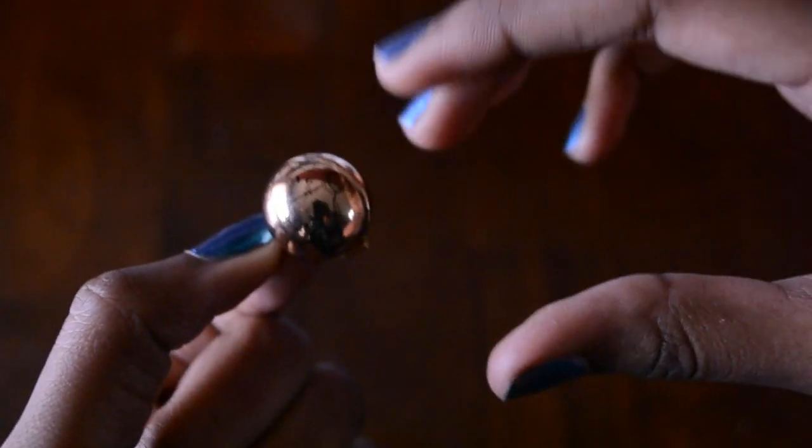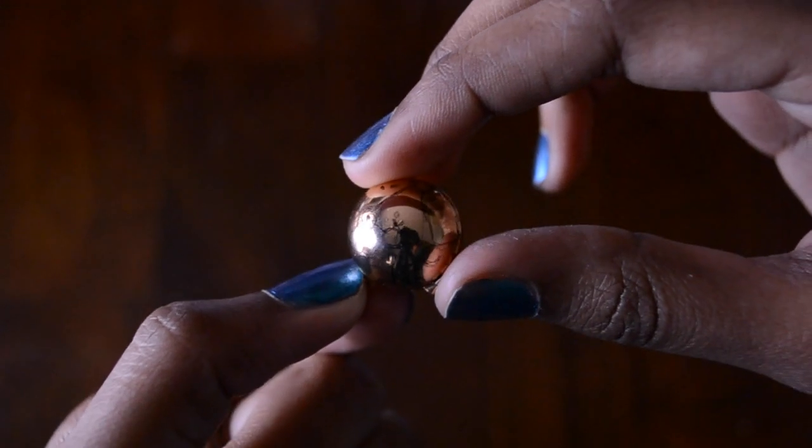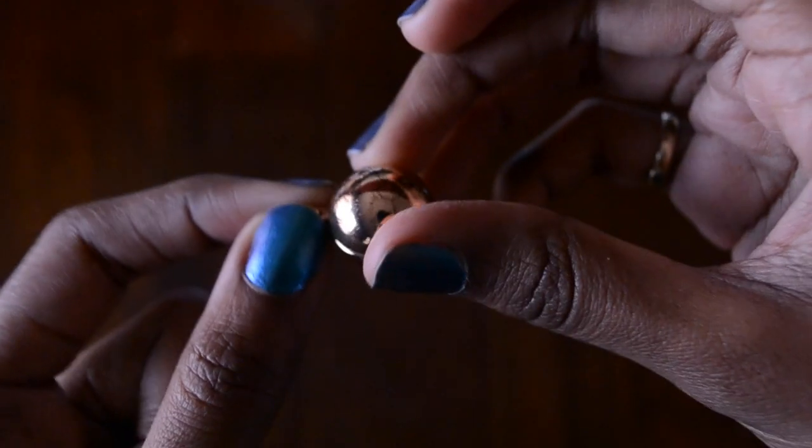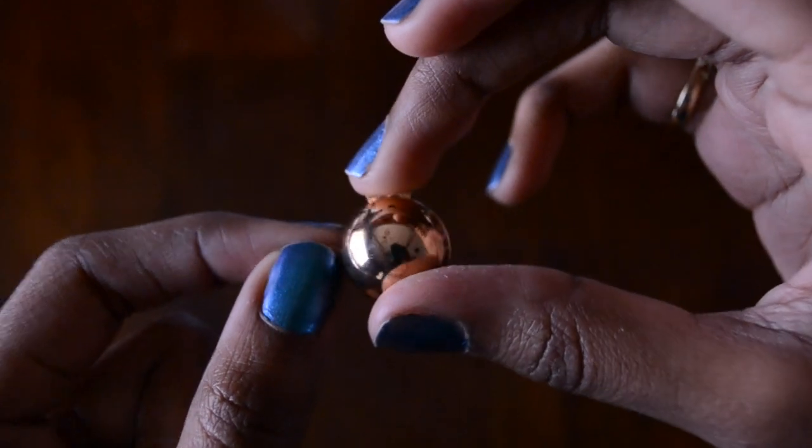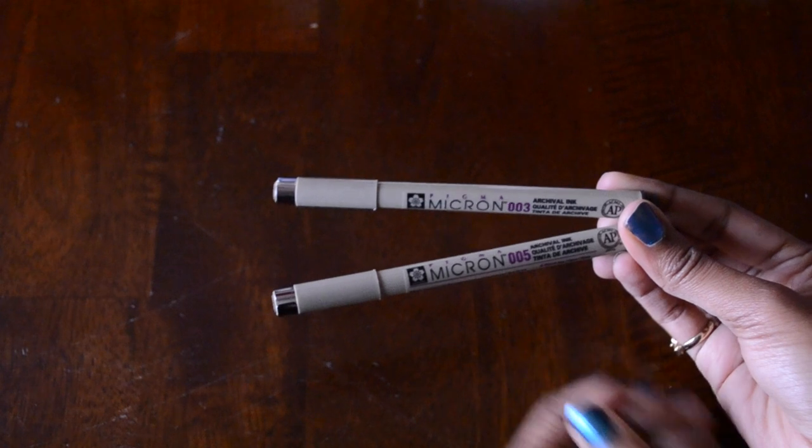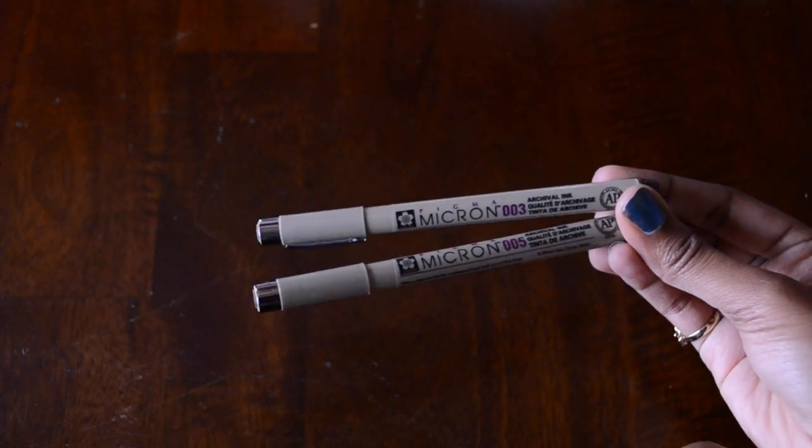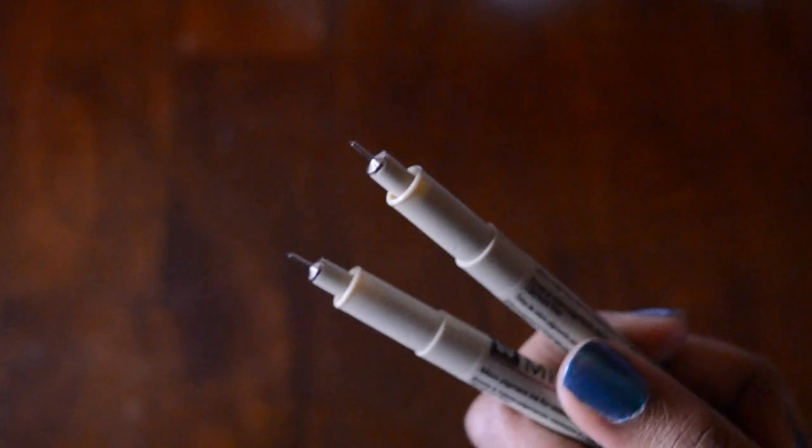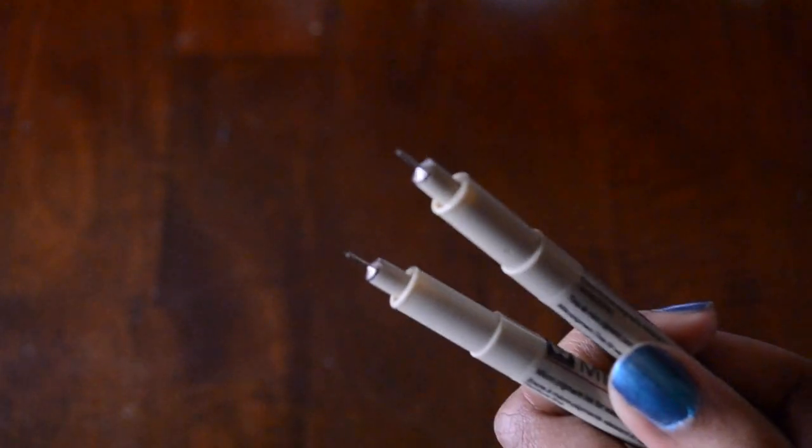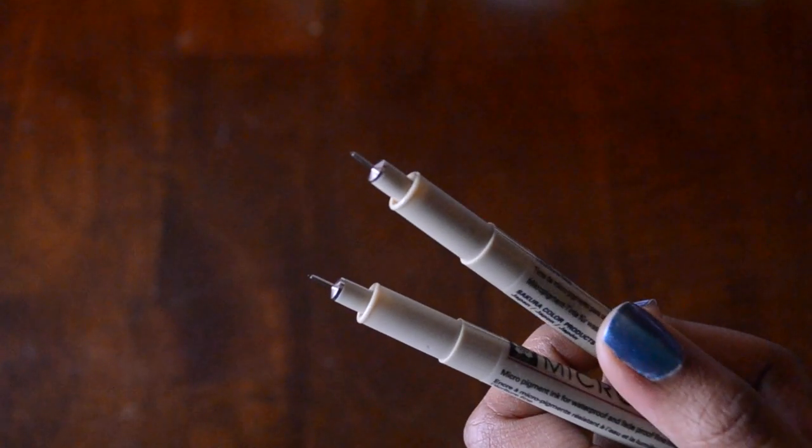You'll start off by sketching the map on the sphere locket. To do that, I used fine-tipped Micron pens, specifically 005 and 003 sizes. You can barely see the tip on the pen because it's so tiny, but it works well for what we're trying to do.